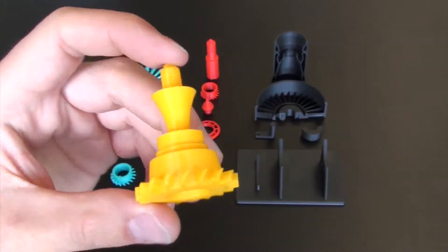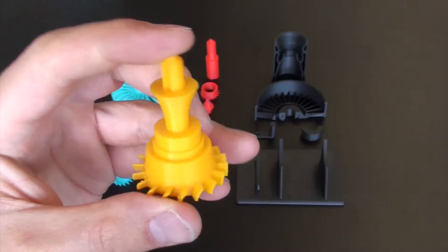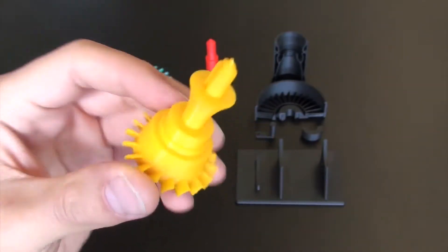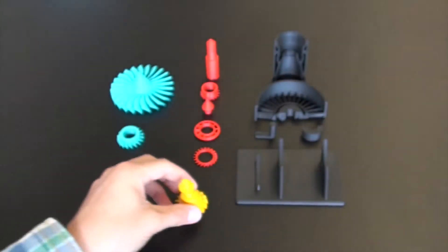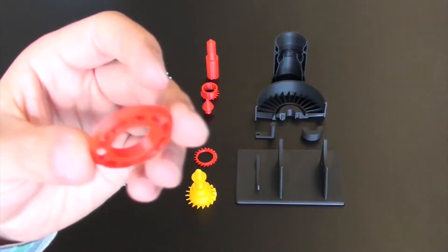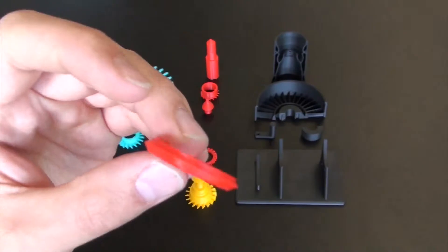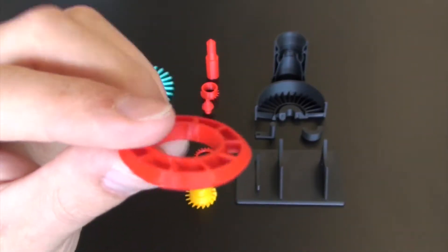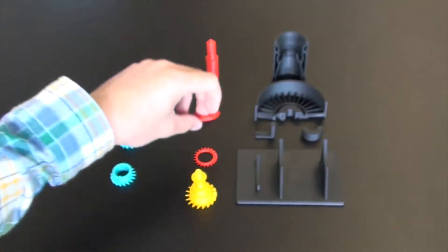So this is on the Ultimaker 2 and that was at 60 microns. All the parts that were done on the Ultimaker 2 Go were also done at 60 microns. As you can see there, it turned out pretty well.